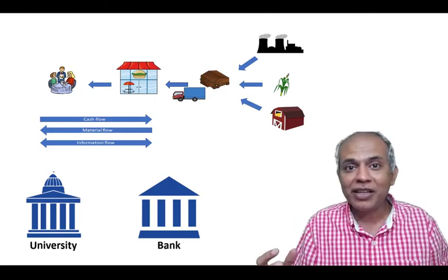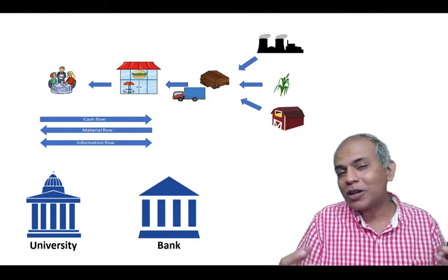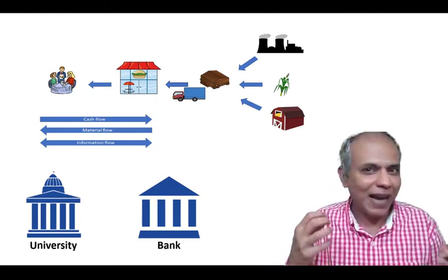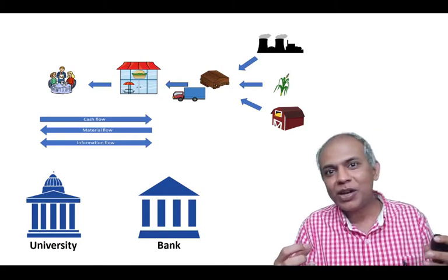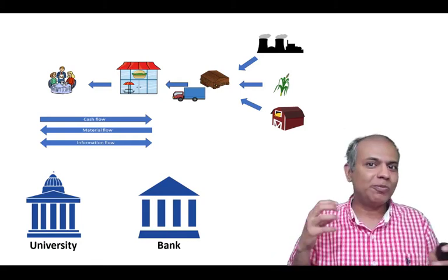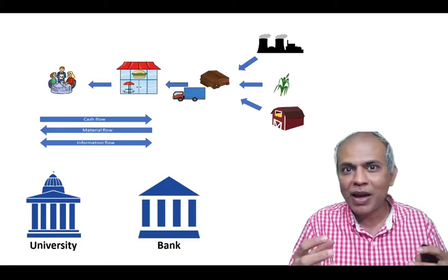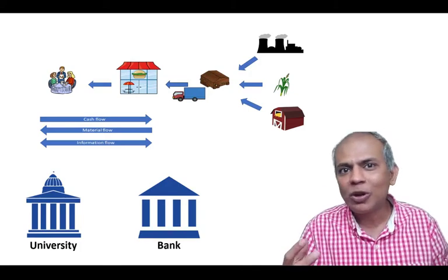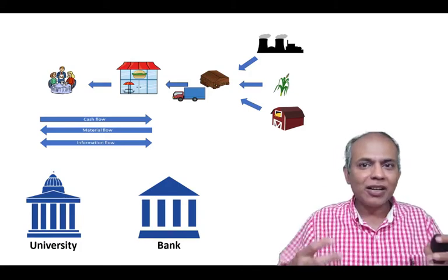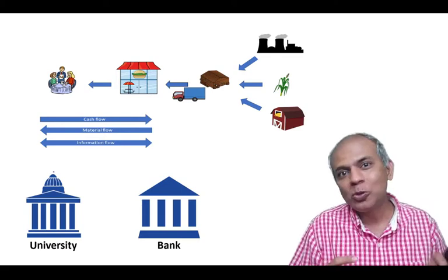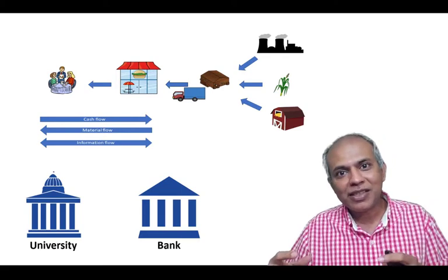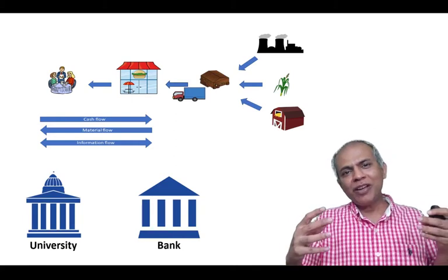So that's one supply chain and they can choose what kind to focus on. Do I want to focus on salaried individuals to deposit money in my bank? Do I want to focus on business people to deposit money in my bank? And what kind of loans do I want to focus on? So here, a bank can also choose what kind of supply chains they want to manage.